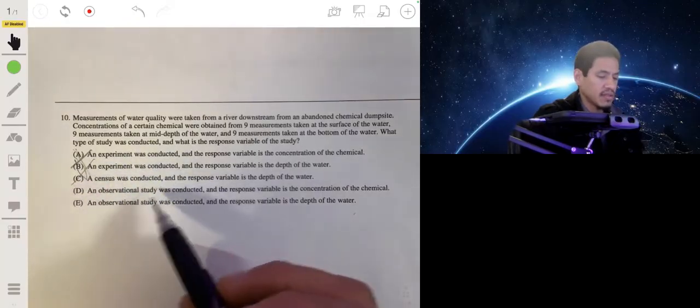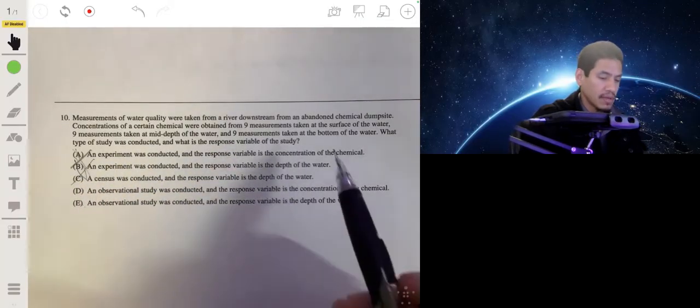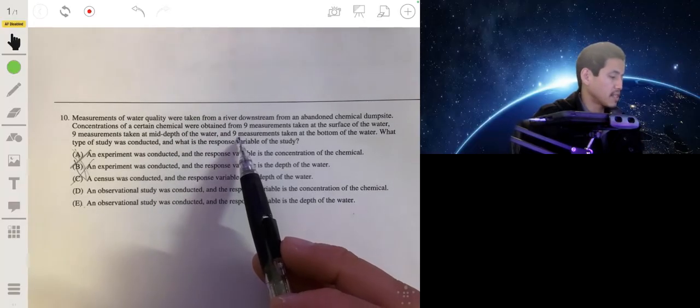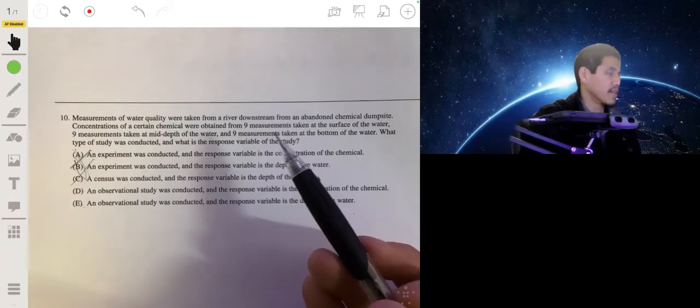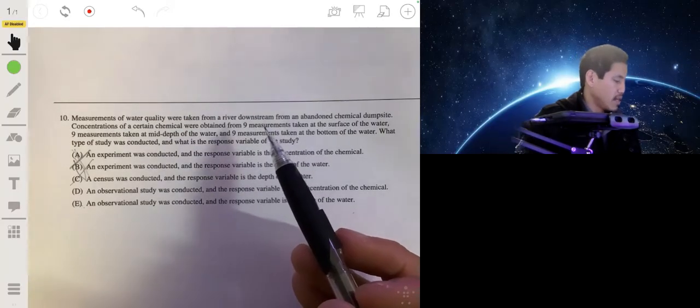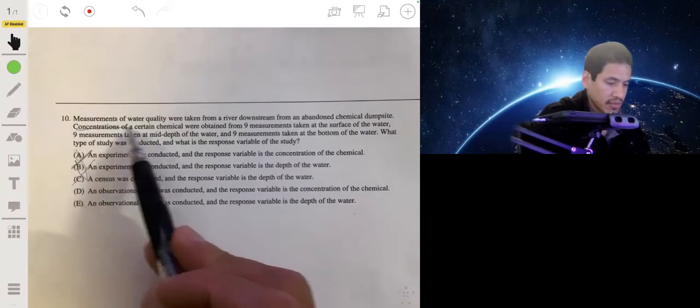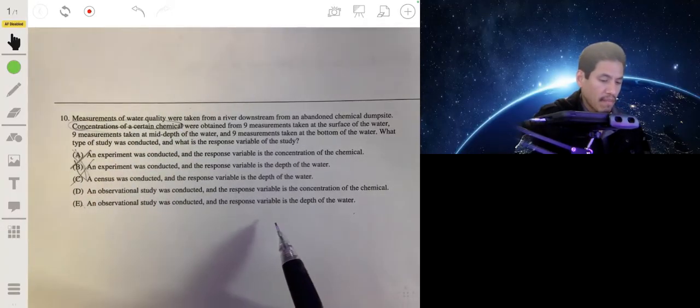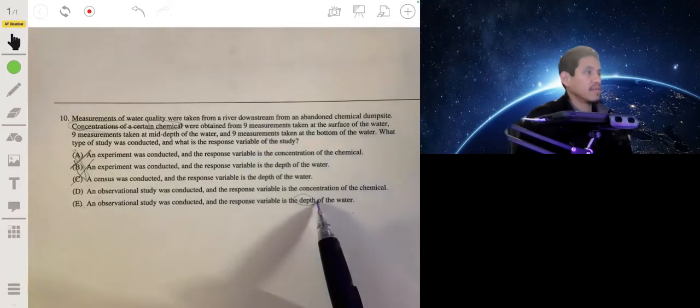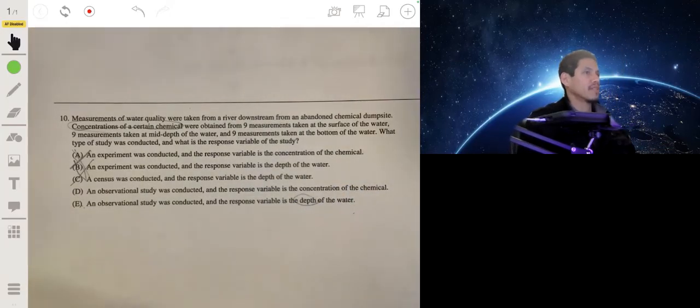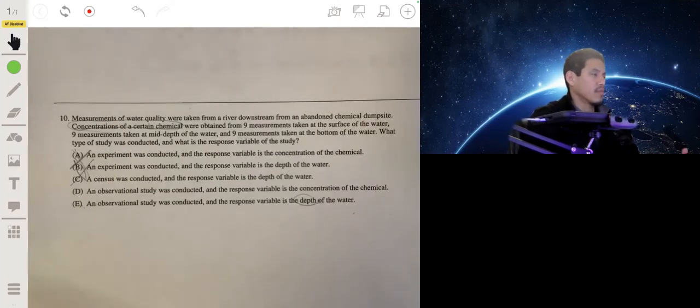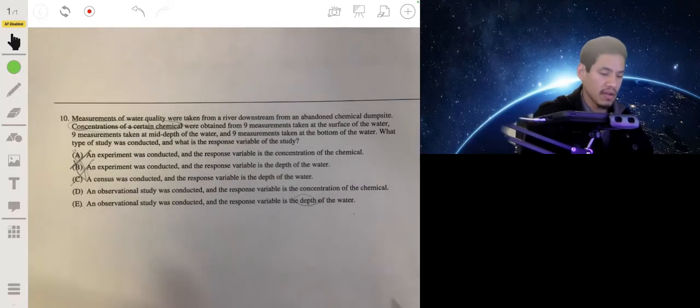So it's going to be D or E. Now, the response variable is essentially what we're trying to measure, what we're trying to understand. So we want to understand the concentration of some chemical. The depth is basically like different groups. Let's say you want to measure the average height of a high school student, you would have freshmen, sophomores, juniors, and seniors. That would be like your four groups, but you're still measuring height. The answer would be D.